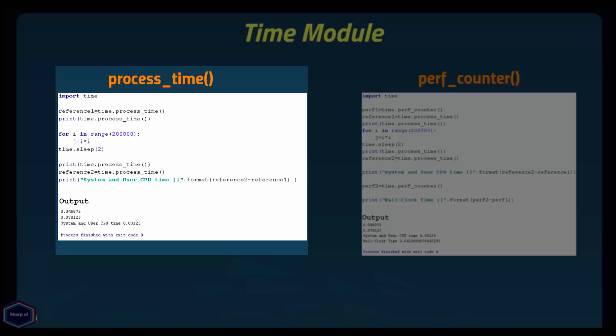The process_time() function returns the system and user CPU time of the current process. It does not include time elapsed during sleep. According to the Python documentation, the reference point of the return value is undefined, so only the difference between results of consecutive calls is valid. In this example, I call process_time() at the start and at the end of the program, and then take the difference between both values to get the user CPU and system time, also called program time.